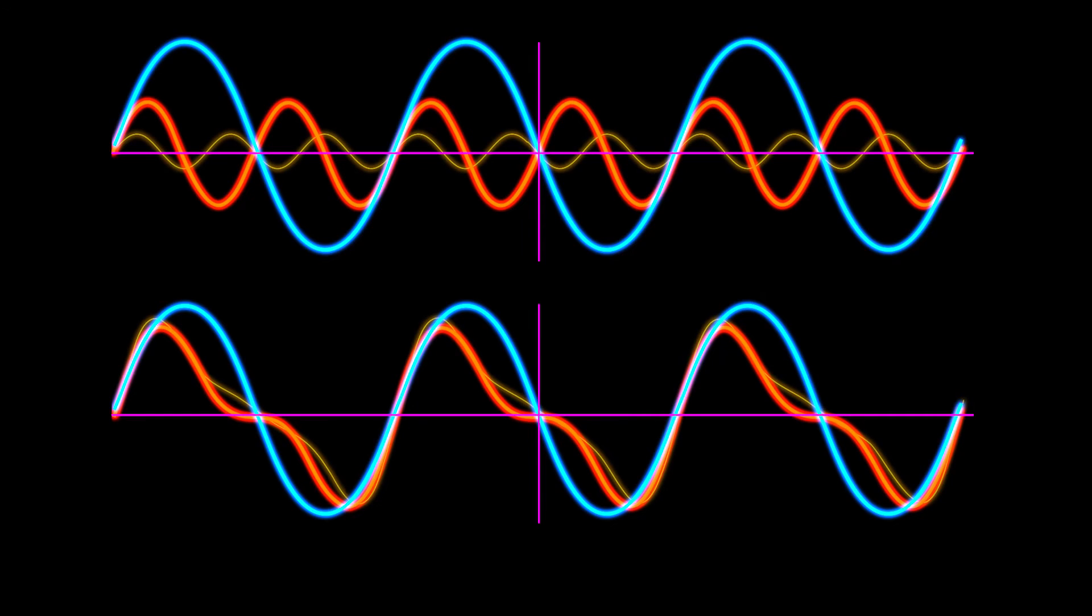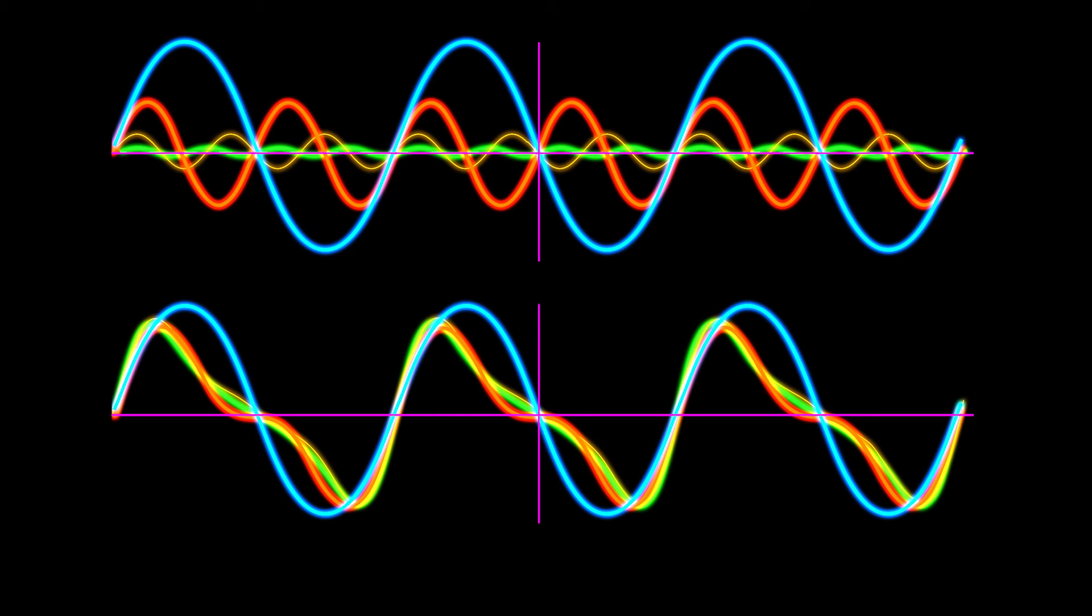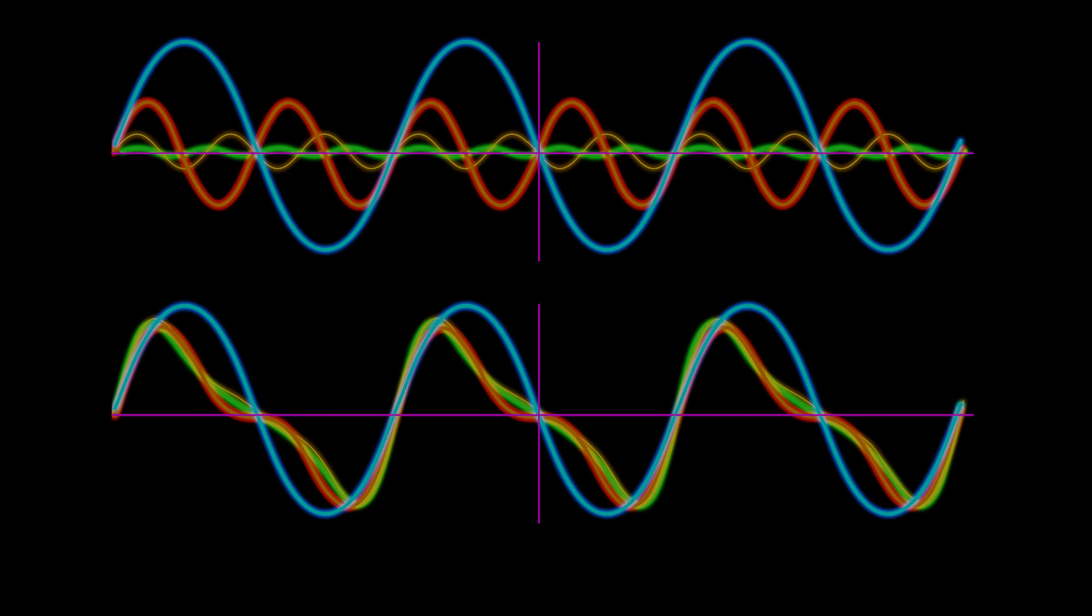Next is the third harmonic which is half the amplitude again and the result of adding the harmonics together on the bottom. Finally the fourth harmonic, half the amplitude again with the addition on the bottom. And now I'll listen to the result of adding harmonics together.